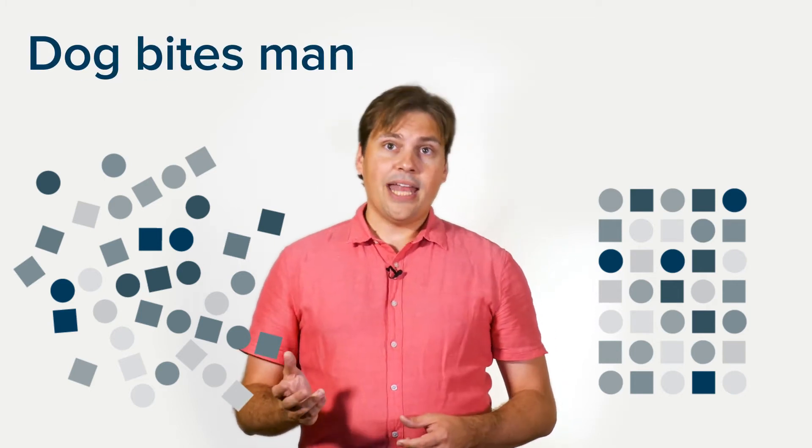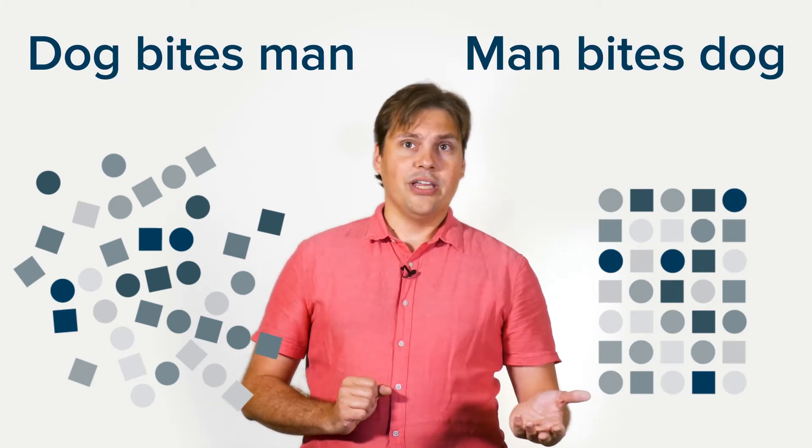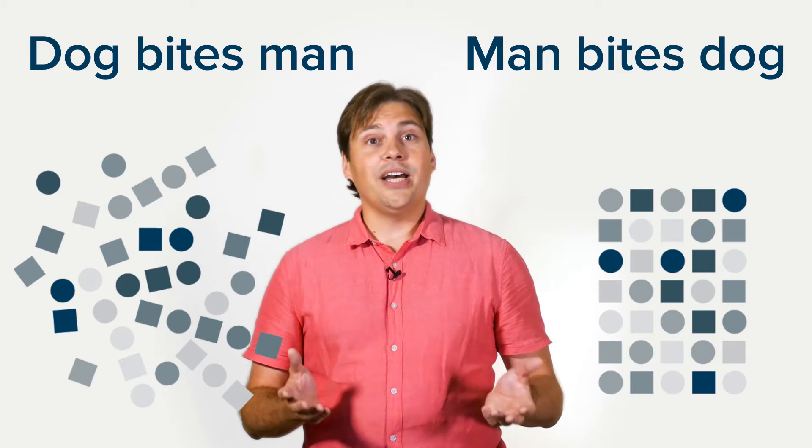Whereas our competitors use a bag of words model that just counts how many times each word appears in a document, we read the text in order, word by word. That means that DISCO AI can see the difference between the phrase dog bites man and man bites dog, whereas the bag of words model would find them identical.